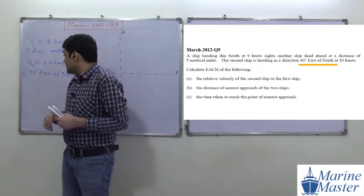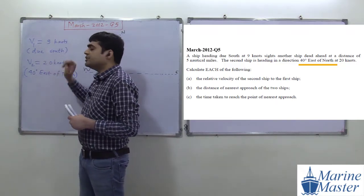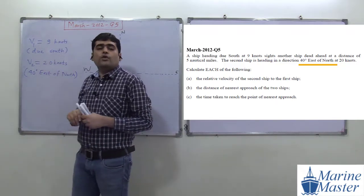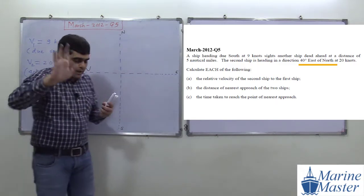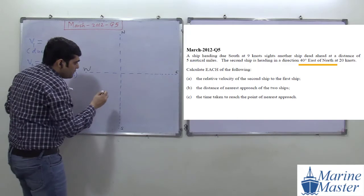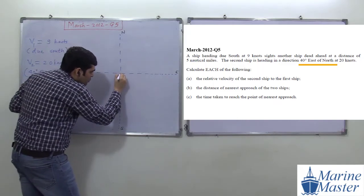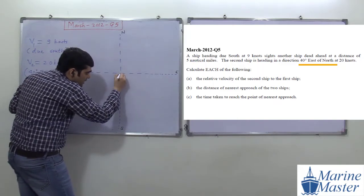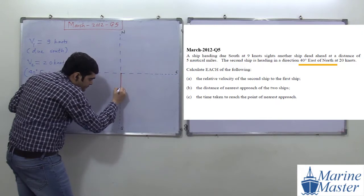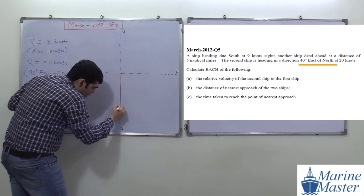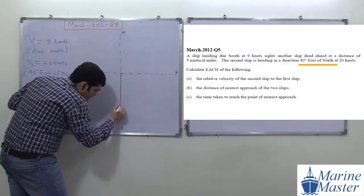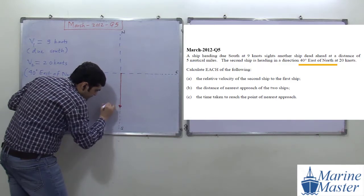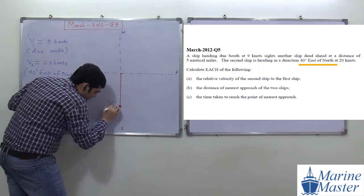The direction of V1 is due south. Now for V2 at 40° east of north: always remember, '40° east of north' means the angle is with respect to north. So V2 is drawn between north and east with a 40° angle from north.